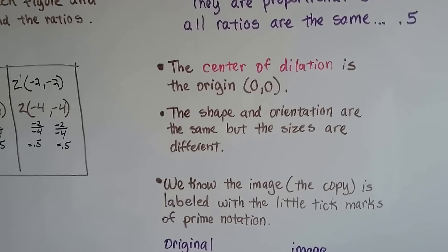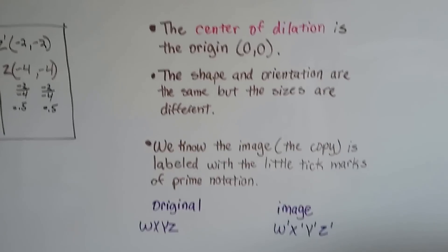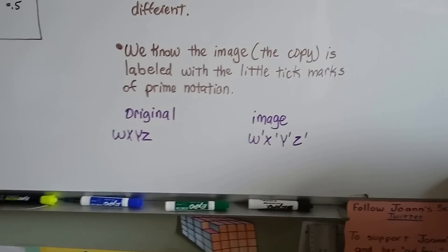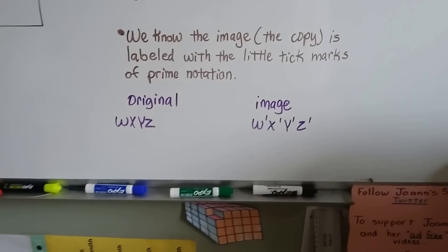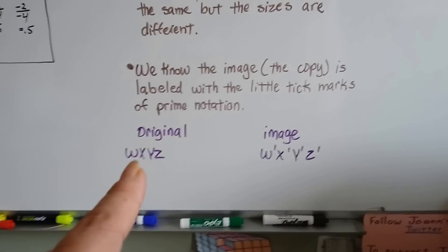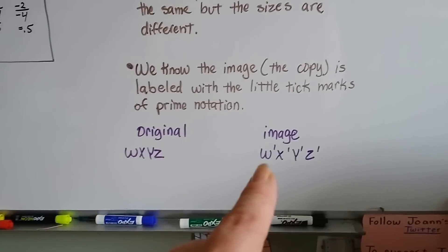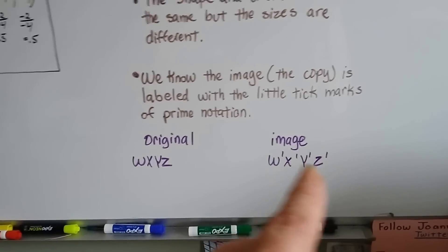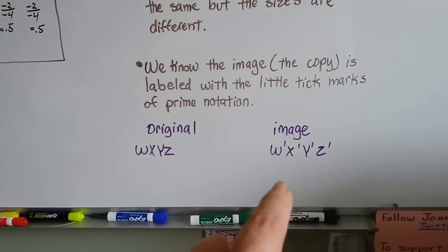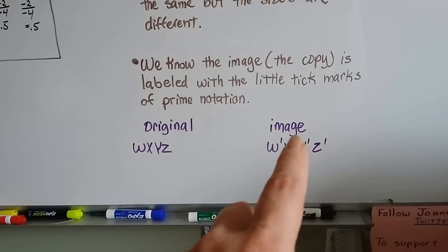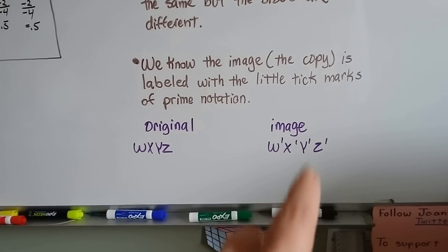The shape and orientation are the same, but the sizes are different. And we know the image, the copy, the pink one, is labeled with little tick marks of prime notation. So we know that the pink one is the copy. The original just says W, X, Y, Z, but the image says W prime, X prime, Y prime, and Z prime with these little tick marks. And if we saw another image that had two little tick marks after each letter, we would know that it's a copy of this one, wouldn't we? It would be a copy of the copy.